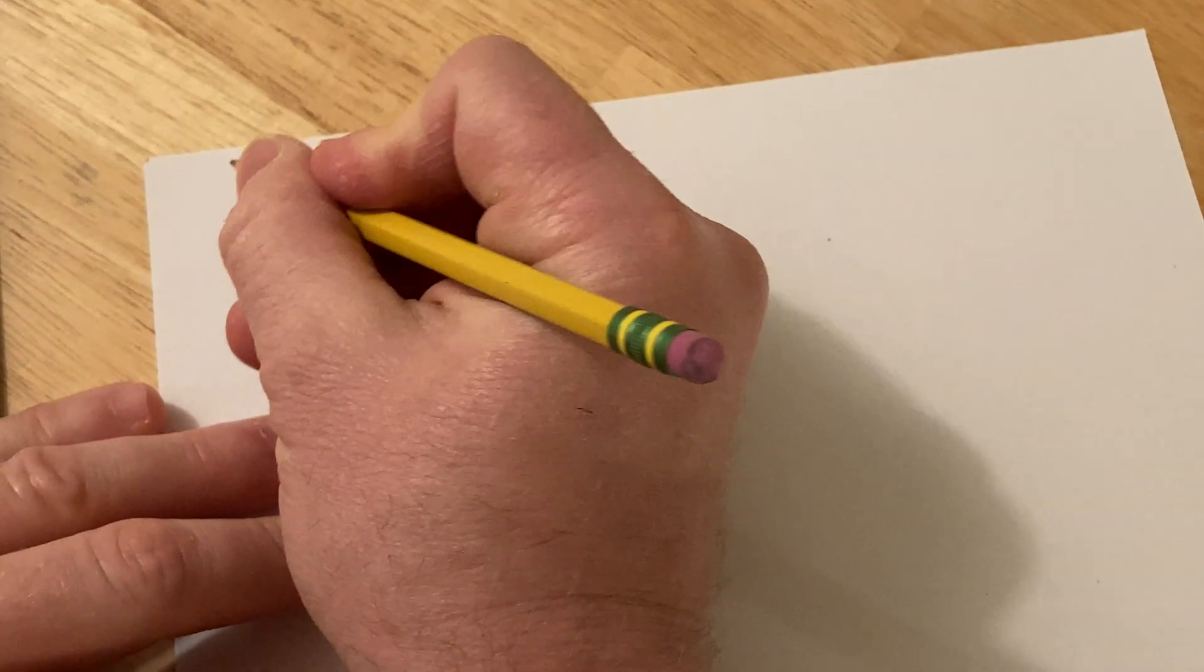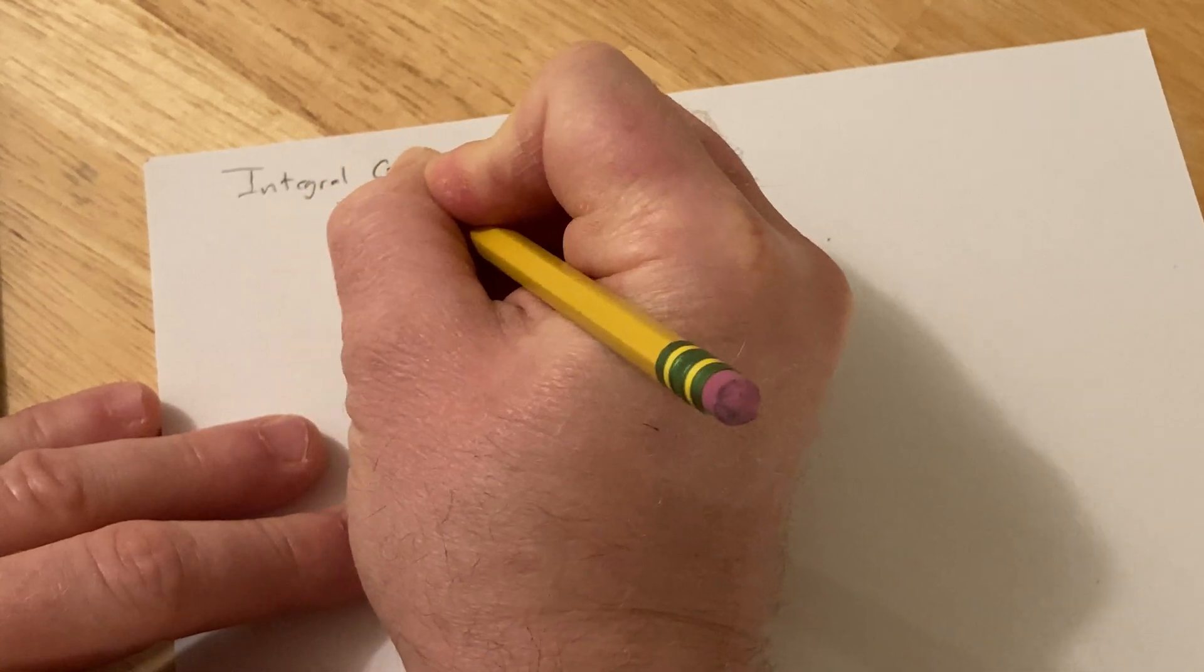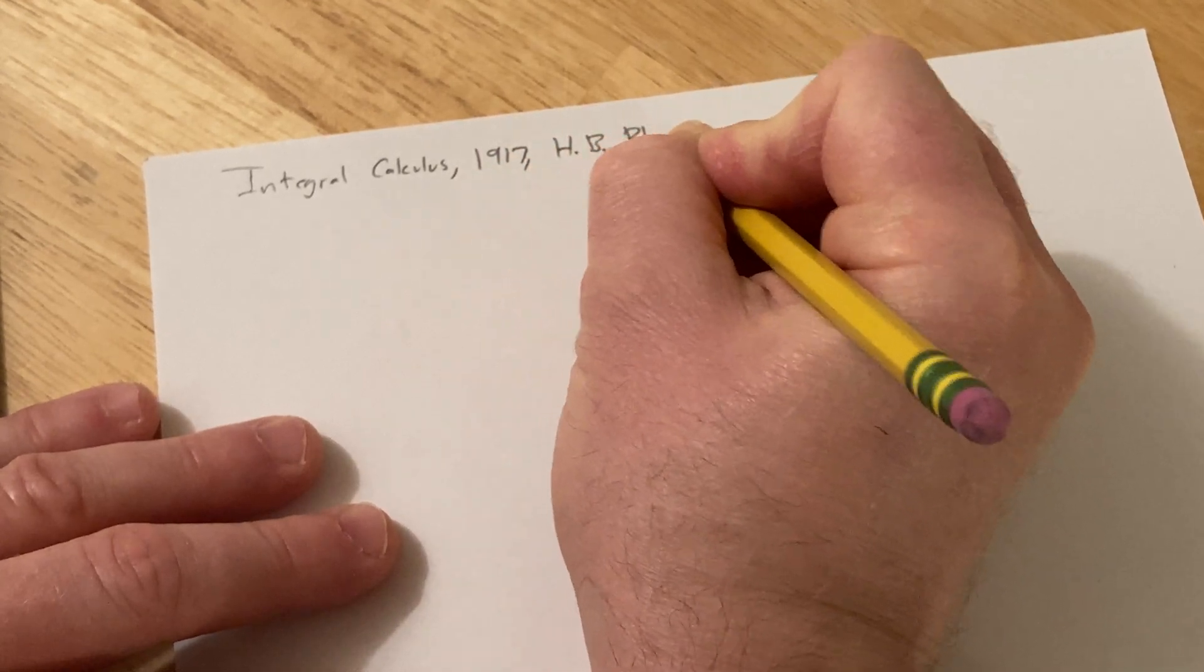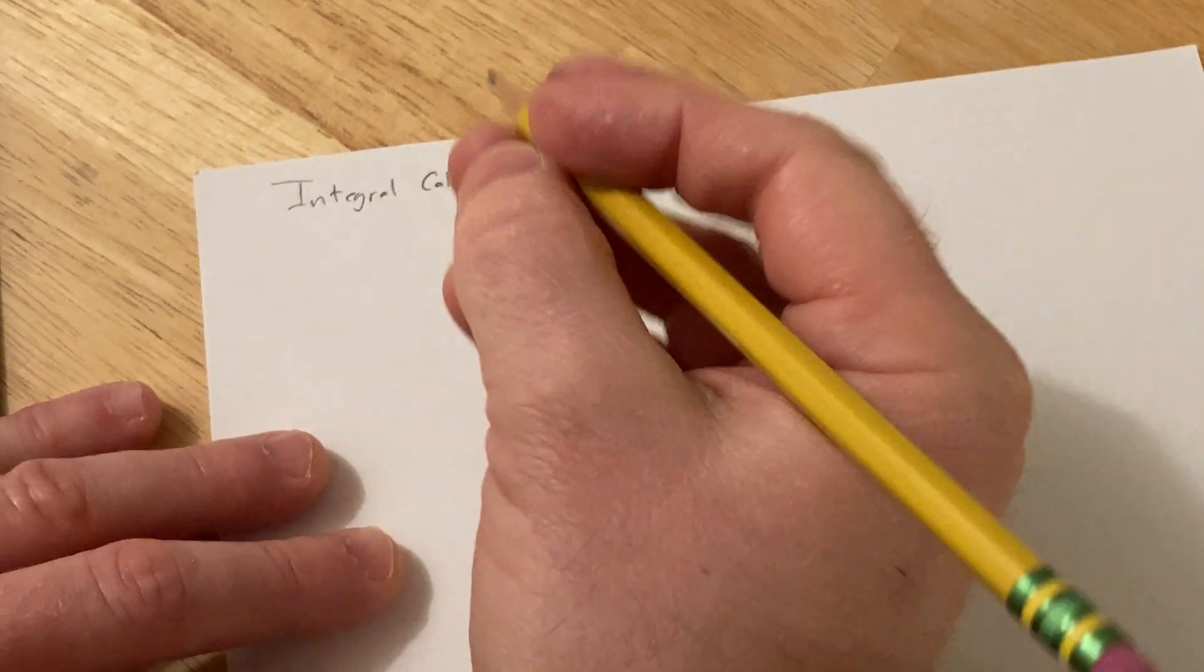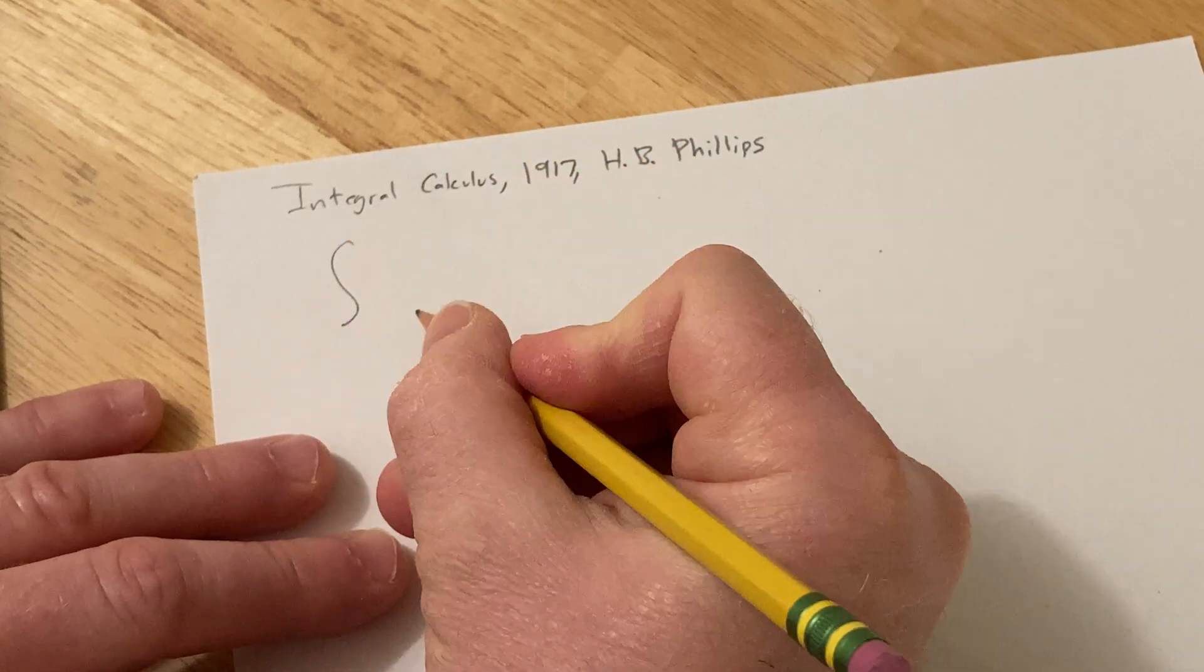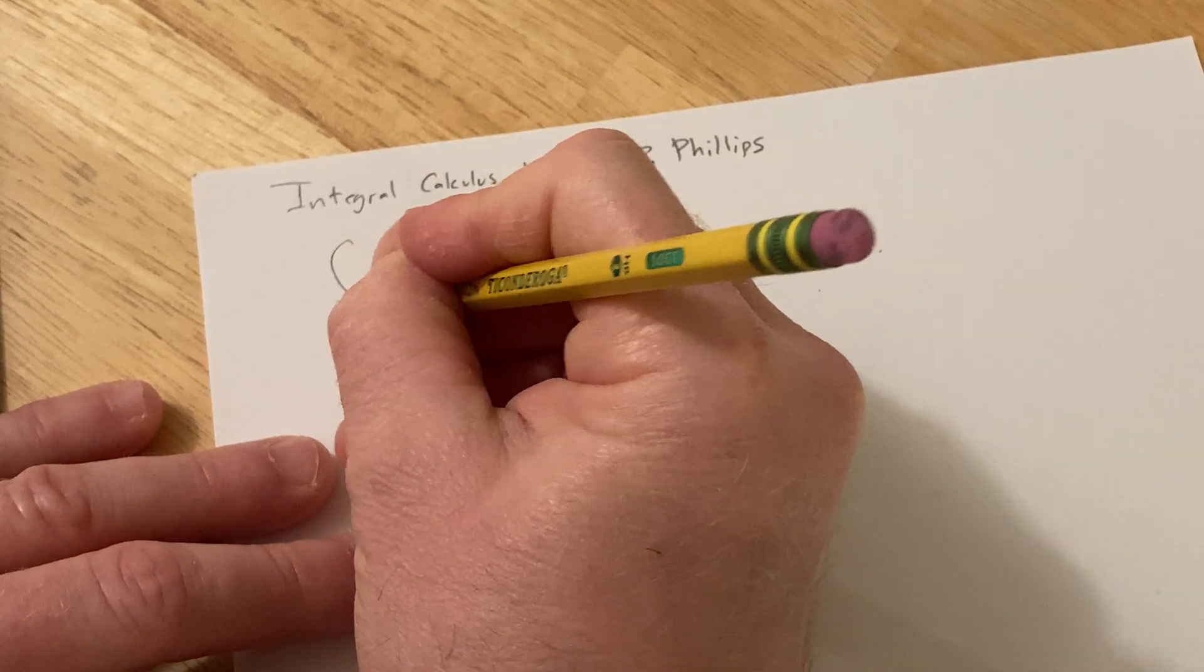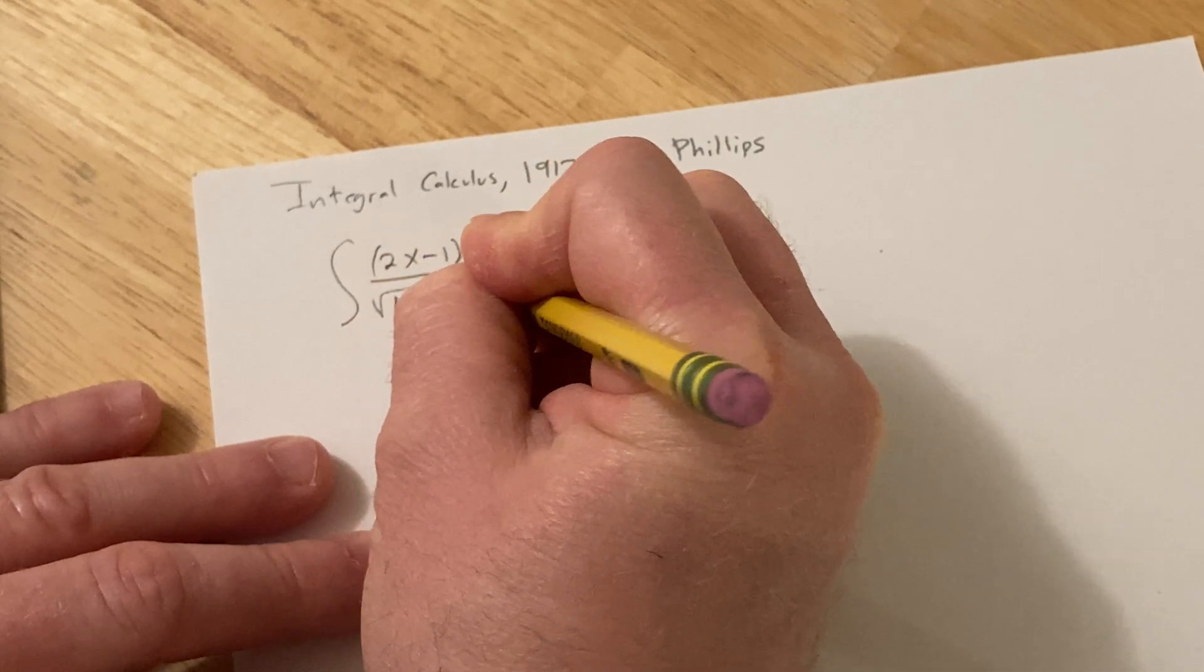Hi, in this video we're going to be doing a problem from a textbook called Integral Calculus, published in 1917 by H.B. Phillips. This is an integral, the indefinite integral of (2x - 1)dx divided by the square root of (4x² + 4x + 2).